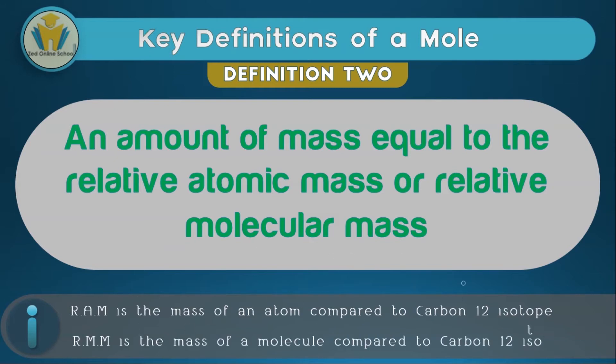The relative molecular mass, on the other hand, is the mass of a molecule compared to the carbon-12 isotope. And as you can see, just the names can give you an idea of which is which. In RAM there's 'atomic', so it's the mass of an atom. While in RMM, which is relative molecular mass, there's 'molecule', so this is the mass of a molecule.